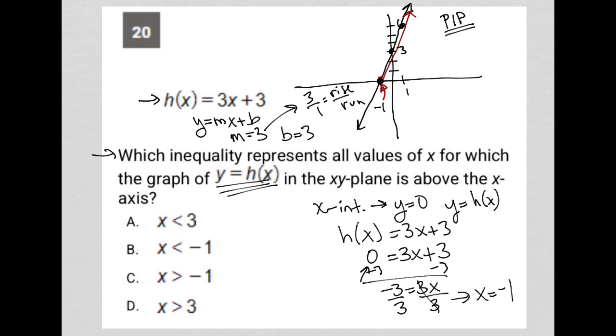Which means all x values greater than negative 1, right? So 0, 1, 2, 3, and so on represent this portion of the graph that is above the x-axis. So that means answer choice C, x is greater than negative 1, is the correct answer.